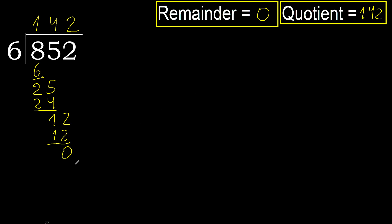Remainder is 0, therefore 852 divided by 6 is 142.